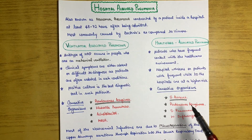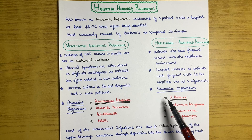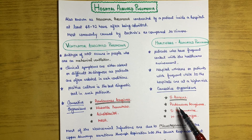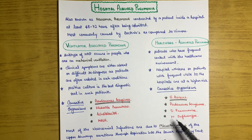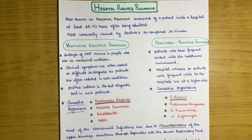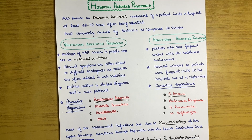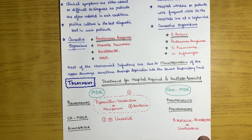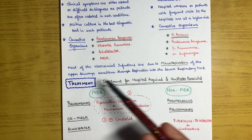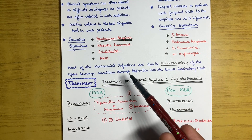The causative organisms for healthcare-associated pneumonia are most commonly Staphylococcus aureus. Other organisms include Pseudomonas aeruginosa, Streptococcus pneumoniae, and Haemophilus influenzae. These are the main causative organisms for healthcare-associated pneumonia.